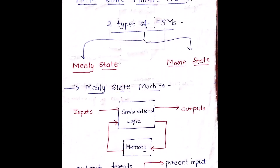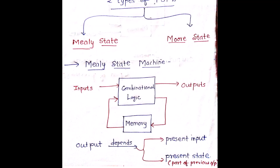There are two types of finite state machines. One is the Mealy state machine, the other one is the Moore state machine. In case of the Mealy state machine, the output depends upon the present input and the present state — that is very important. So in the Mealy state machine, my output depends upon the present input and my present state, wherein my present state is nothing but a part of my previous output. A Mealy state machine basically depends upon two inputs: one is the present input, and the other one is the present state, which is the part of my previous output. The output definitely depends upon the present inputs, and a certain part of my previous output is given via the memory. That is my Mealy state machine.